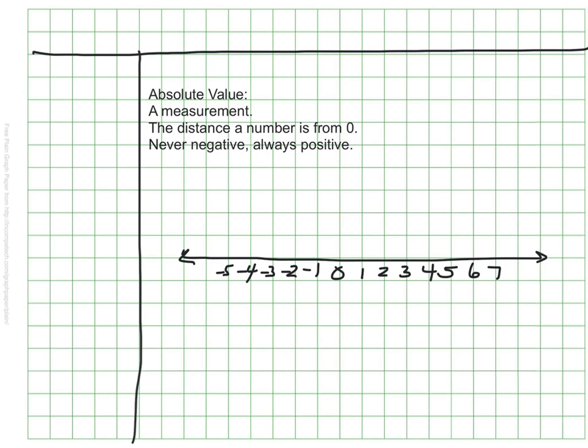If we look at our number line here, and we look at the number five, we can know that the absolute value of five is five, because it is five spaces away from zero.